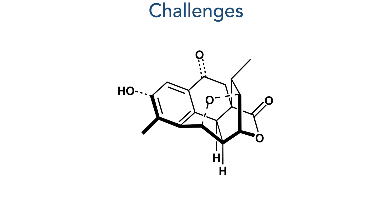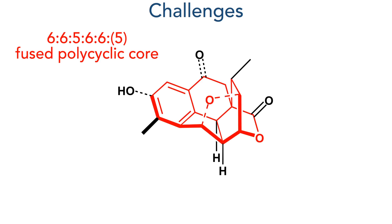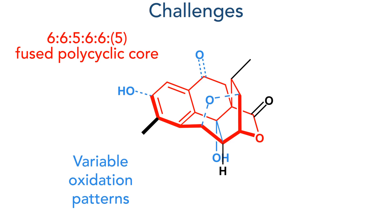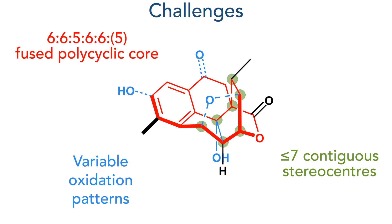The cephanolides are quite a challenging target for total synthesis as they have a fused polycyclic core with either 5 or 6 rings and varying patterns of oxidation around this carbon skeleton. This is made even more challenging by the presence of up to 7 contiguous stereocenters within the molecule.